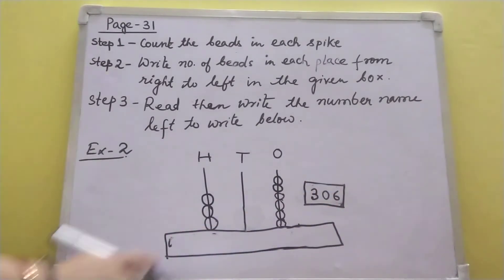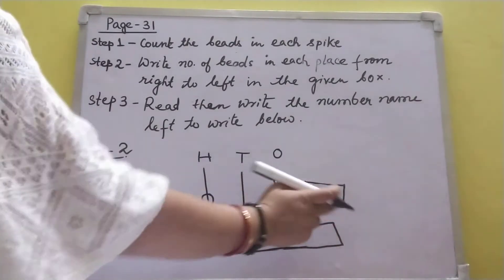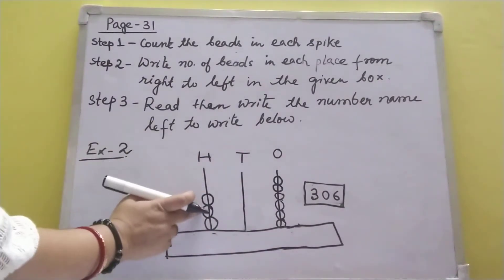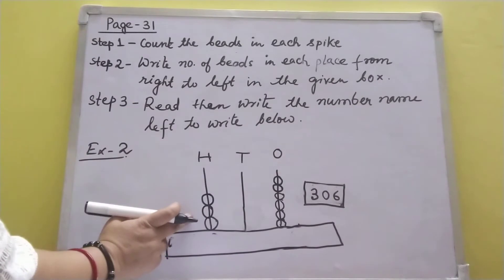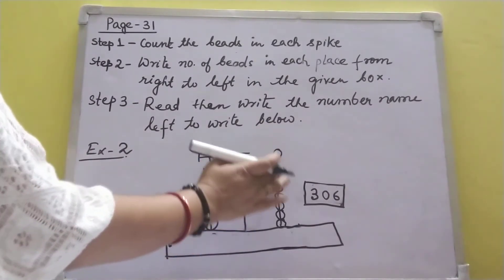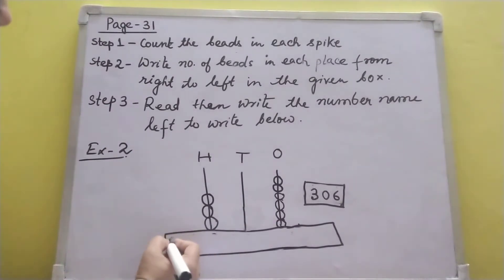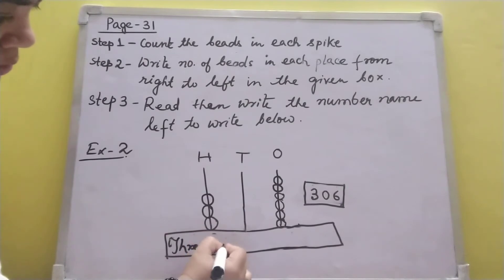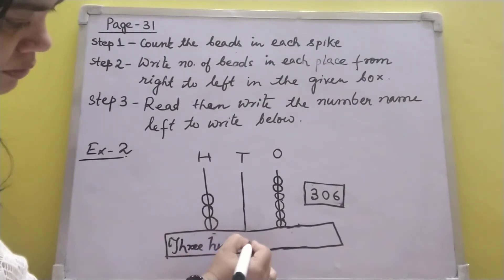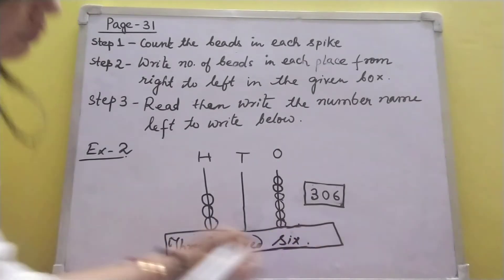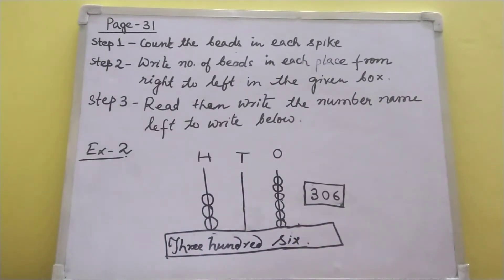Now let me read the number name. In hundreds place: 3, that is 300. In tens place: nothing is there. In ones place: 6. So the number is 306. That was question number 1, solved like this.